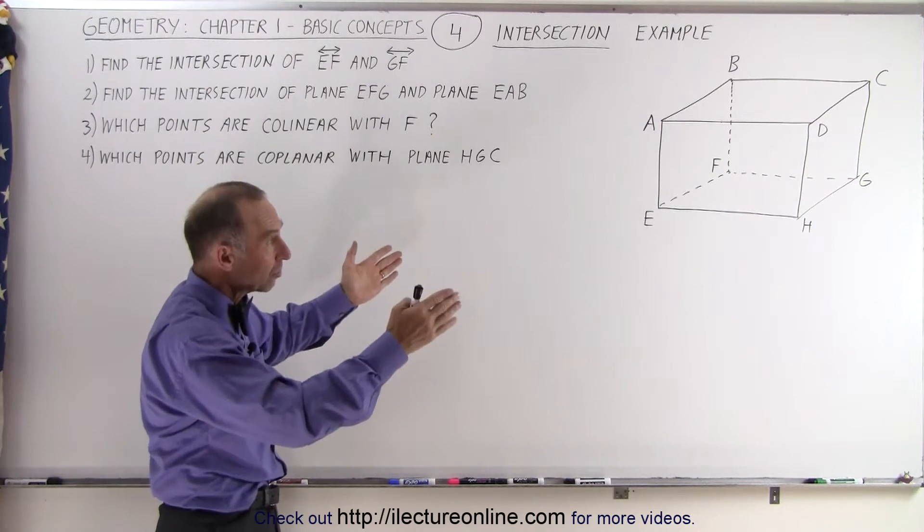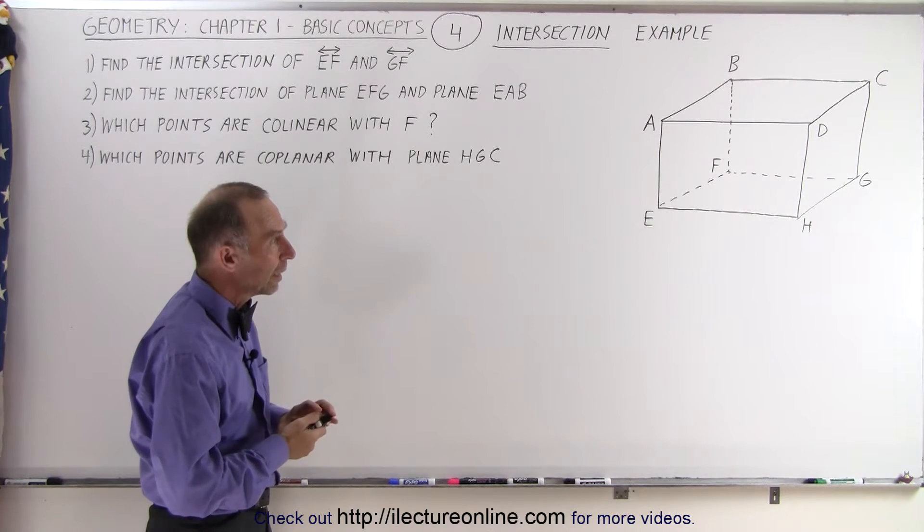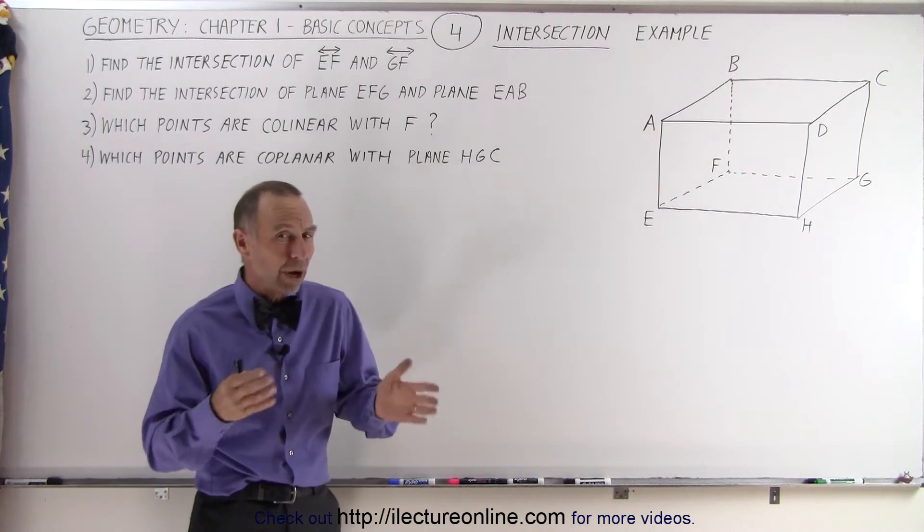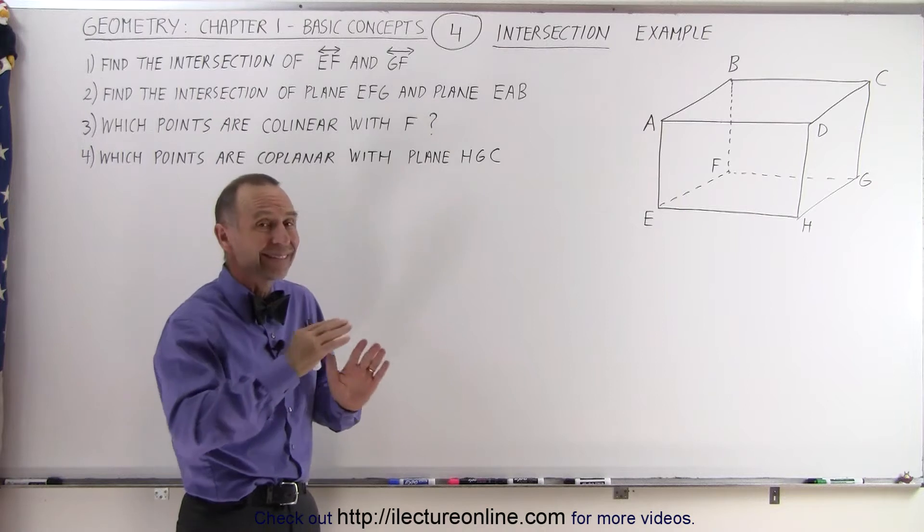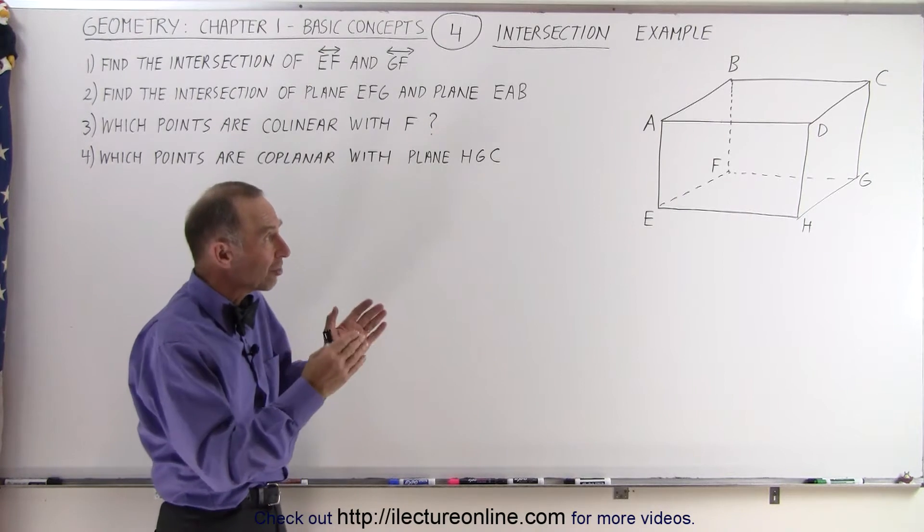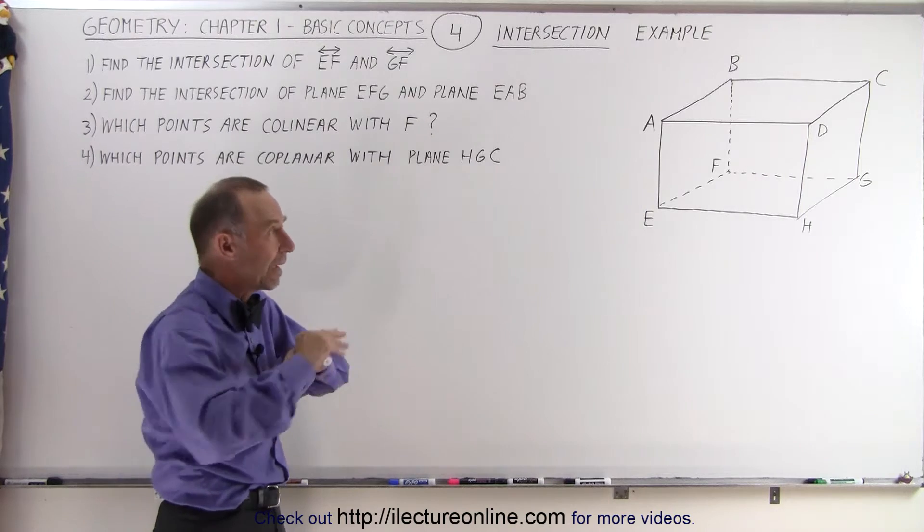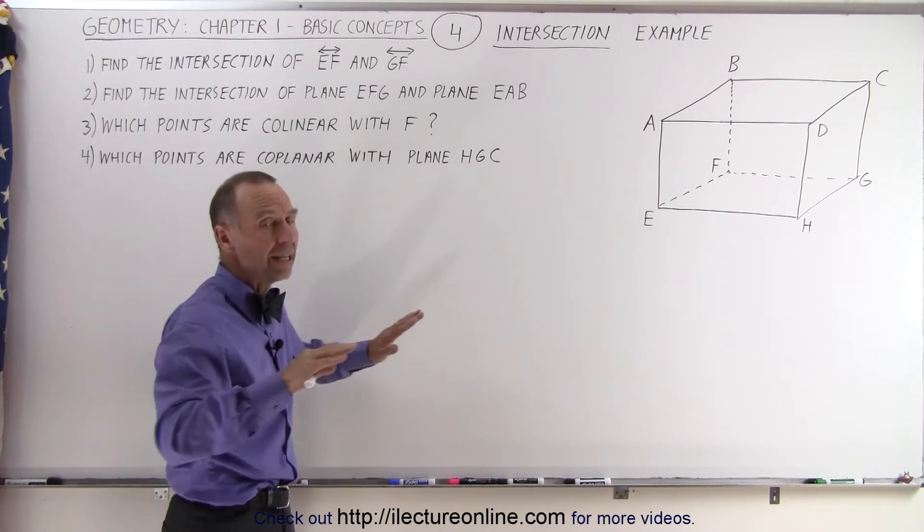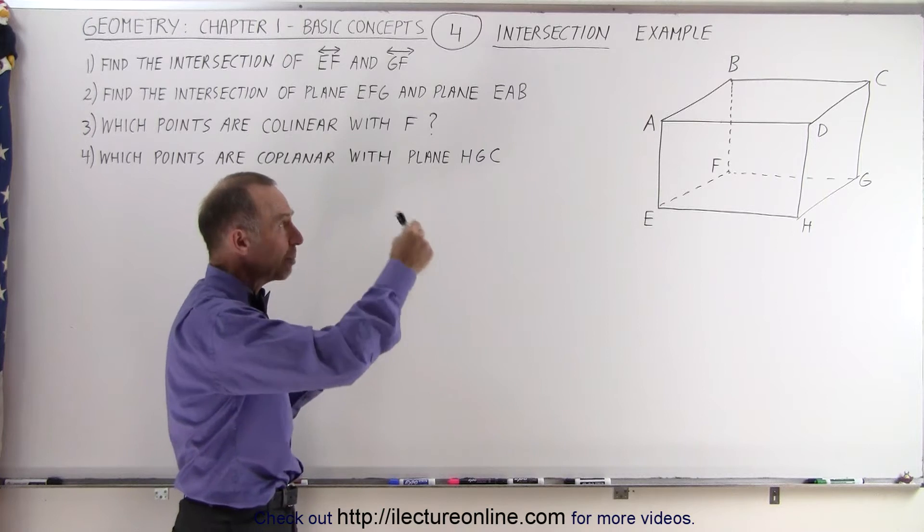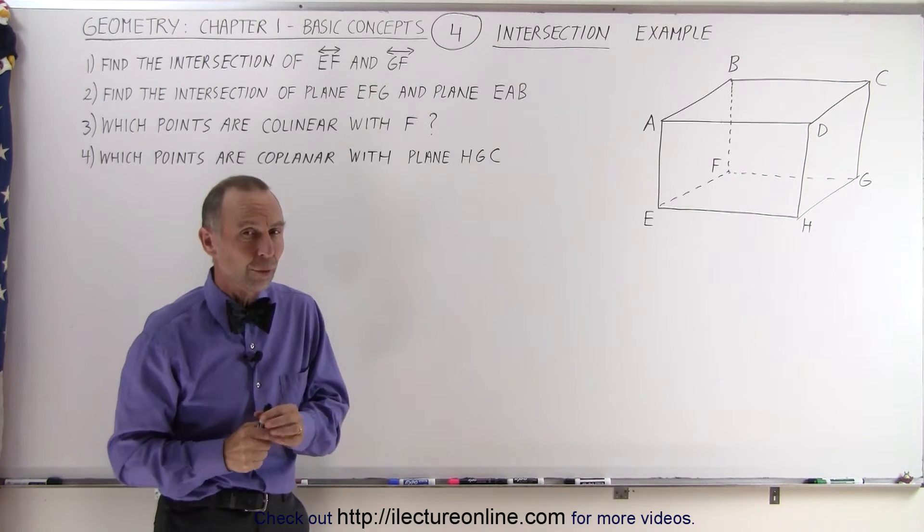Now here we have a box, looks like a cube. Each cube has six sides, and we can imagine that each of the six sides represents a plane. And we can imagine that the plane goes out to infinity, even though we only have lines drawn from A to B, from B to C, C to D, and so forth.